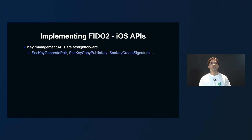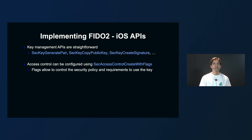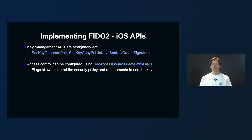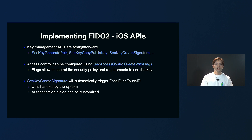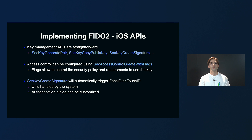For implementation, we first need to build an abstraction layer, so I'll first talk about the iOS side. iOS key management APIs are straightforward. The most important ones are SecKeyGeneratePair, SecKeyCopyPublicKey, and SecKeyCreateSignature. By passing access control attributes to SecKeyGeneratePair, we can configure the key protection mechanism using the SecAccessControlCreateWithFlags function. Those flags allow us to define the security policy and requirements to use the private key — this is how we require the SE to only sign data if the user authenticates with biometrics. If a key is configured to require biometric authentication, calling SecKeyCreateSignature automatically triggers the Face ID or Touch ID authentication dialogue. Developers do not have to worry about handling the UI themselves, and if needed, the prompts can be customized.